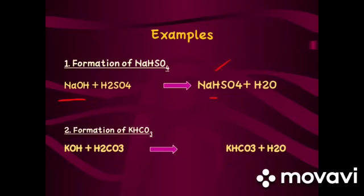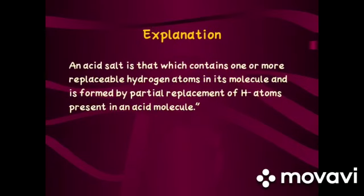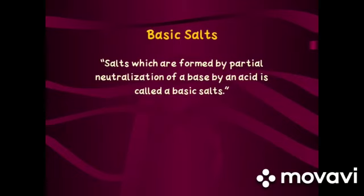Due to the presence of the H group, we use the prefix 'bi' — for example, sodium bisulfate. Similarly, KOH reacts with carbonic acid H₂CO₃ to form potassium bicarbonate and water. Hydrogen group is present in potassium bicarbonate, making it an acidic salt. An acidic salt contains one or more replaceable hydrogen atoms in its molecule and is formed by the partial replacement of H atoms in an acid molecule. Acidic salts can react further with bases to form normal salts.